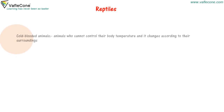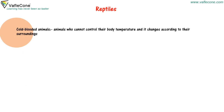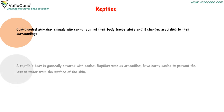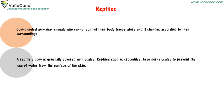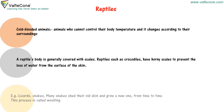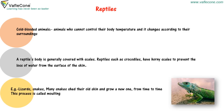Cold-blooded animals are called reptiles. These are animals that cannot control their body temperature, and it changes according to their surroundings. A reptile's body is generally covered with scales. Reptiles such as crocodiles have horned scales to prevent loss of water from the skin. For example, lizards and snakes. Many snakes shed their old skin and grow a new one — this process is called molting.